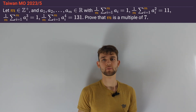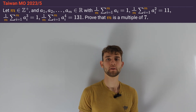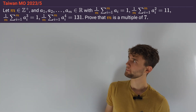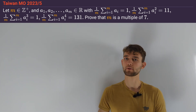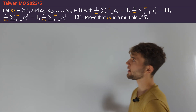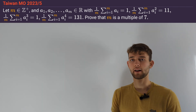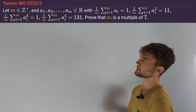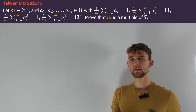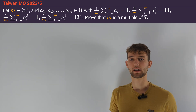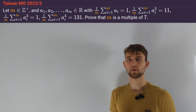Today I'm going to present Taiwan Math Olympiad 2023 Problem 5. Let's first take a look at the problem statement. m is a positive integer and we consider real numbers a_1, a_2 up to a_m such that the average of the a_i equals 1, the average of their squares is 11, the average of a_i cubed is again 1, and the mean of a_i to the power 4 equals 131. We are asked to prove that m is a multiple of 7.